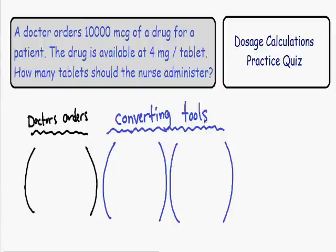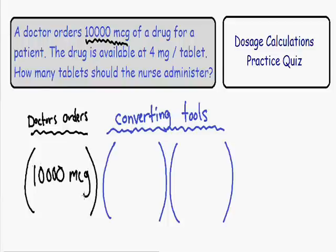Now let's fill in all of our information. Starting with the doctor's orders — the question states the doctor ordered 10,000 micrograms of a drug. So in the first parentheses we have 10,000 micrograms. We need to take this and convert it into our final answer, which needs to be in tablets, because the question asks how many tablets the nurse should administer. Somehow we need to get rid of micrograms and turn it into tablets.